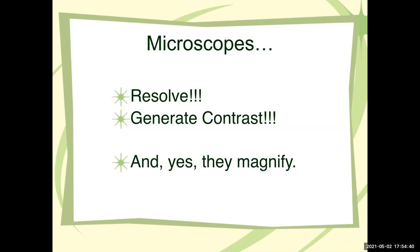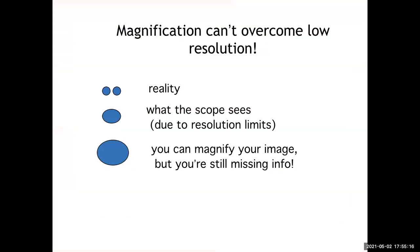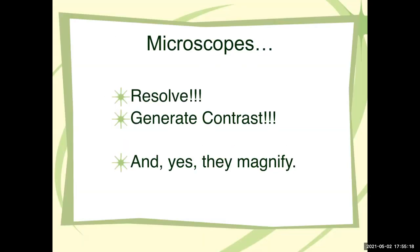Let's all contribute to solving climate change so we can keep going — otherwise it's just going to be microbes again. So microscopes: they resolve, they generate contrast sometimes — but the predominant thing they do is resolve. Contrast comes from the scope depending on the kind, and also very much the specimen prep. They do magnify things, but that's not their essence. The really useful thing they do is create resolution.